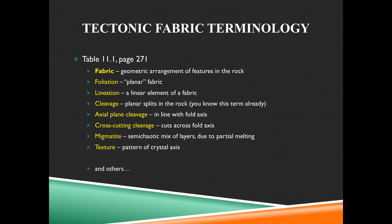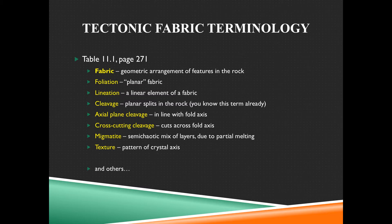Starting off with some terminology for tectonic fabric. This is fabric specifically caused by tectonic activity, which is different than the fabric that we would get from the formation of the rocks — that has nothing to do with stresses from tectonic activity. This is all about stress-induced fabric. So the first term to define is fabric: a geometric arrangement of features in the rock. There is a regularity to the orientation of stuff — minerals, cracks, colors, layers — some feature in the rock is arranged in a regular way. That's fabric.